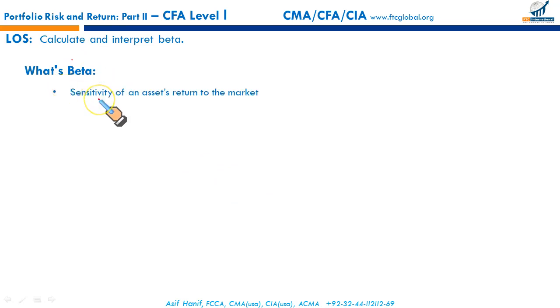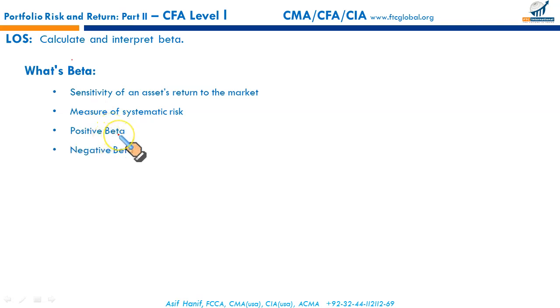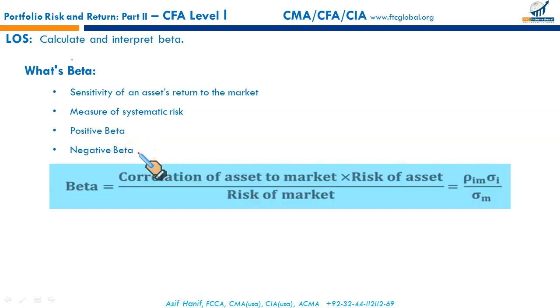The next LOS says: calculate and interpret beta. Beta is essentially the sensitivity of an asset's return to the return of the market. Beta measures or captures systematic risk. It can be positive or negative. A positive beta means the asset's return moves with the market. A negative beta means the asset moves opposite to the market. Beta is calculated as: correlation of the asset to the market times the standard deviation of the asset divided by the standard deviation of the market.